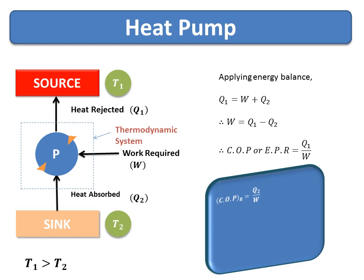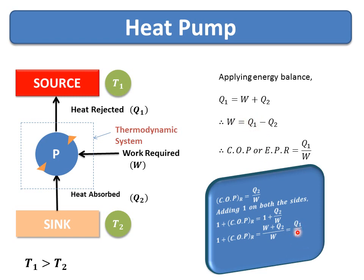The COP of the refrigerator is Q2 divided by W. If we add 1 to both sides, we get 1 plus COP of refrigerator equals 1 plus Q2 upon W, which equals W plus Q2 upon W. Since W plus Q2 equals Q1, this is nothing but Q1 upon W, which is the COP of the heat pump. Therefore, 1 plus COP of refrigerator always equals COP of heat pump. This is the relation between the COP of the heat pump and COP of the refrigerator.